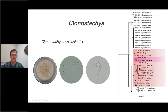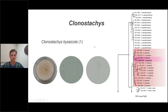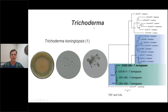We also found Clonostachys, which is really interesting because Clonostachys is a genus considered a biocontrol agent. The species we found was Clonostachys bicyclospora. We also found Trichoderma — specifically Trichoderma koningiopsis.